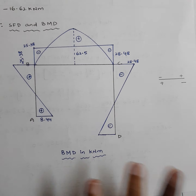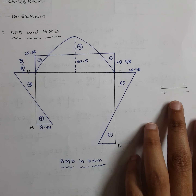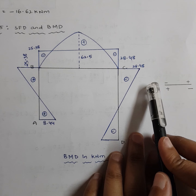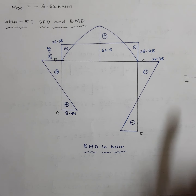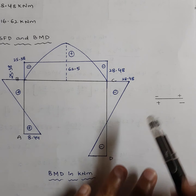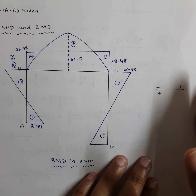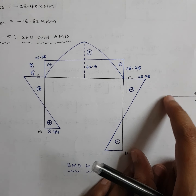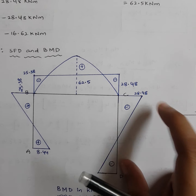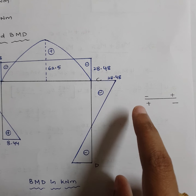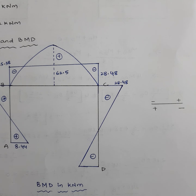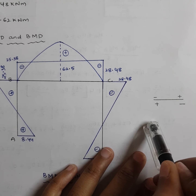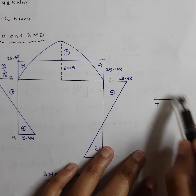For the sign convention when drawing the BMD: when moving left to right (e.g., MBC), a negative value is drawn above the line, positive below. When moving right to left (e.g., MCB), a positive value is drawn above the line, negative below. Apply this convention consistently for all members.